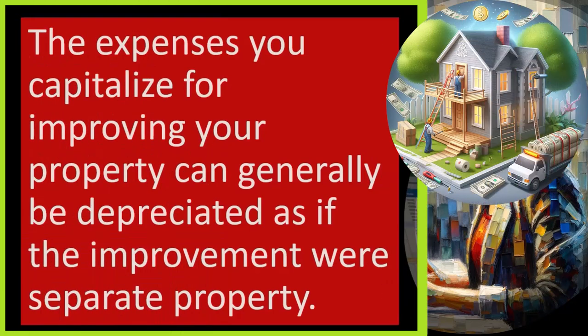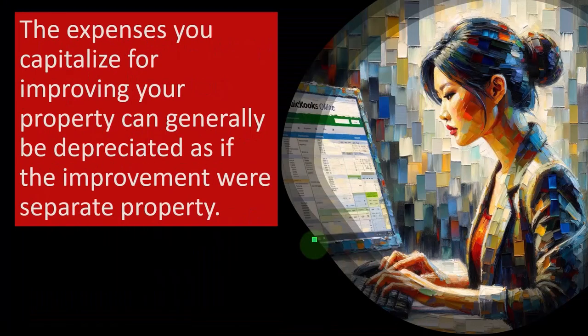If you determine your cost was for an improvement to a building or equipment, you may still be able to deduct your cost under the routine maintenance safe harbor. Expenses you capitalize for improving your property can generally be depreciated as if the improvement were separate property — a separate line item on your depreciation schedule with its own depreciation allocation, depreciated over the useful life according to the depreciation terms related to the improvement.